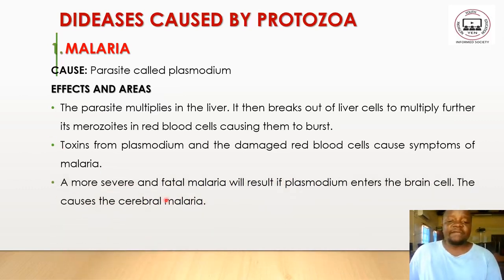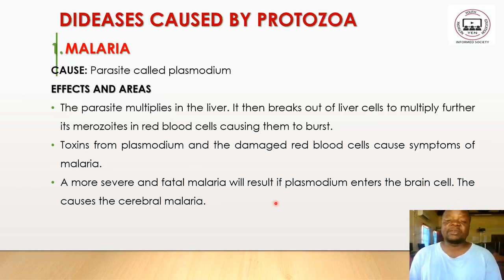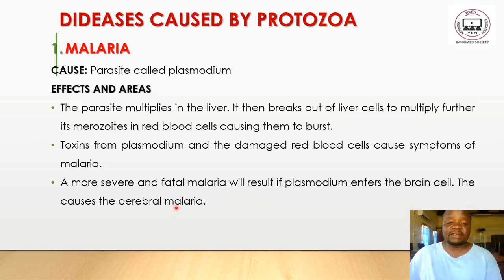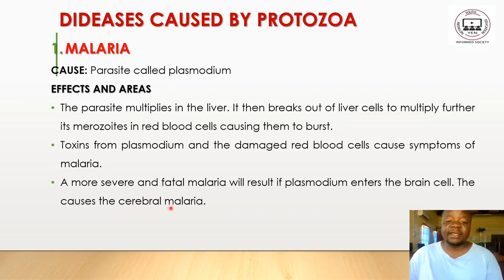The most severe and fatal malaria results if plasmodium enters the brain cells. When the plasmodium reaches the brain cells, it can be fatal — it can cause death. This causes cerebral malaria. From the liver, the plasmodium can spread through the blood circulatory system to the brain, causing cerebral malaria, which can claim lives.